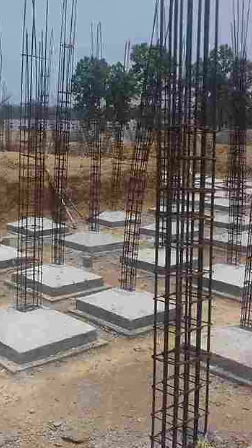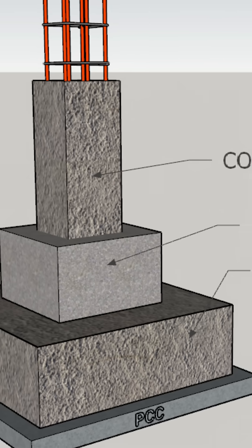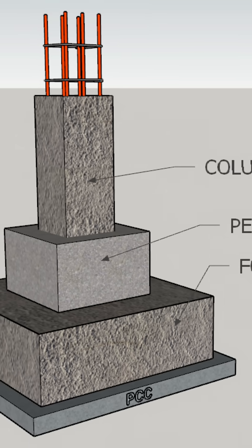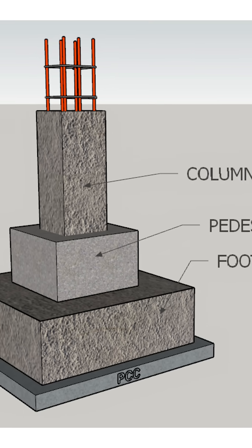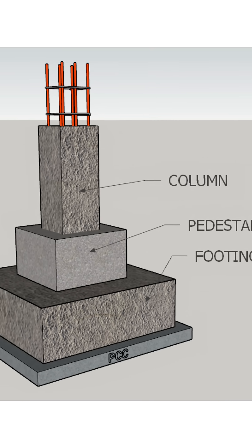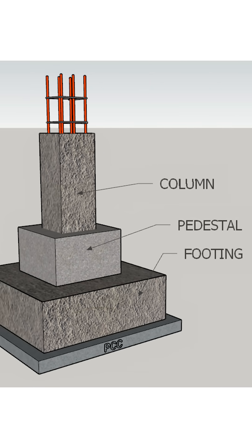So, what's the solution? We increase the size of the column only at the base — just a small portion. And this enlarged portion is called a pedestal. The pedestal increases the surface area where the load is transferred and helps resist punching shear effectively. It's a simple and practical design technique used in real projects.